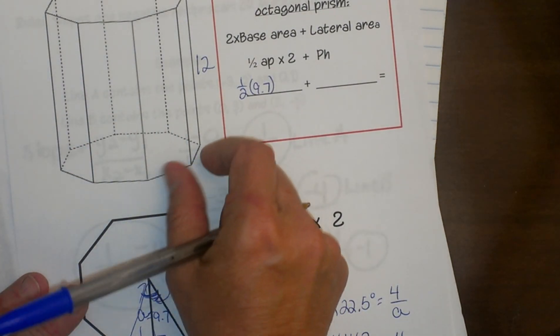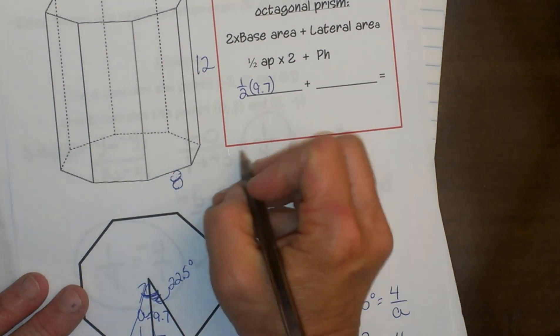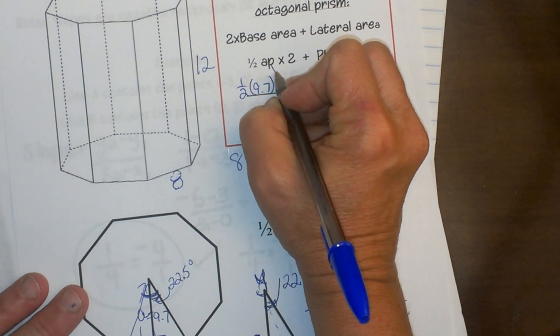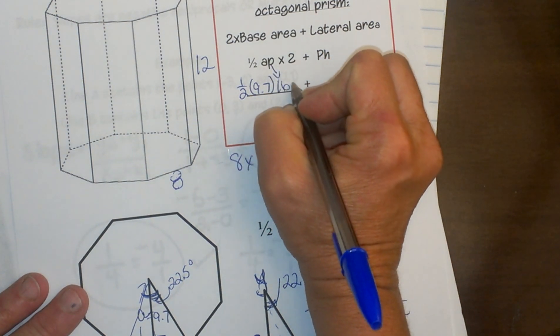So one-half the apothem, which is 9.7, times the perimeter. Okay, what is the perimeter of this base? Well, one side is 8. I have 8 sides. So 8 times 8 sides gives me 64. So that is my perimeter. And then I'm going to double that.